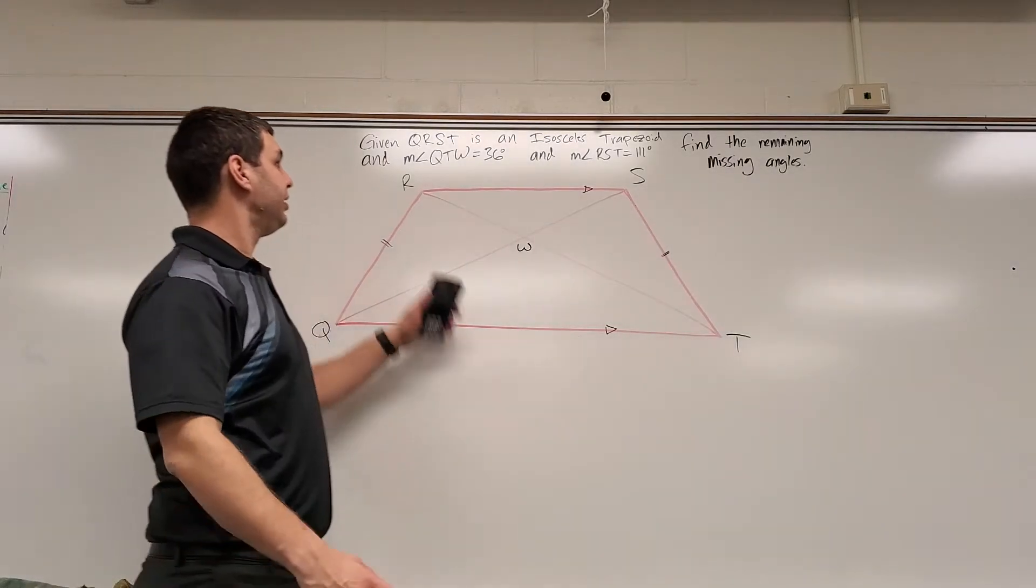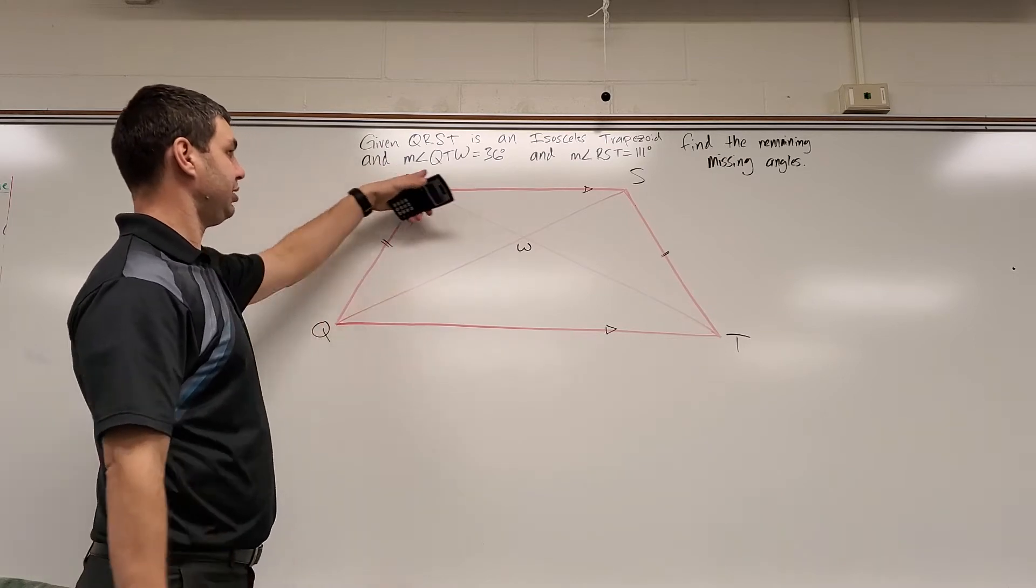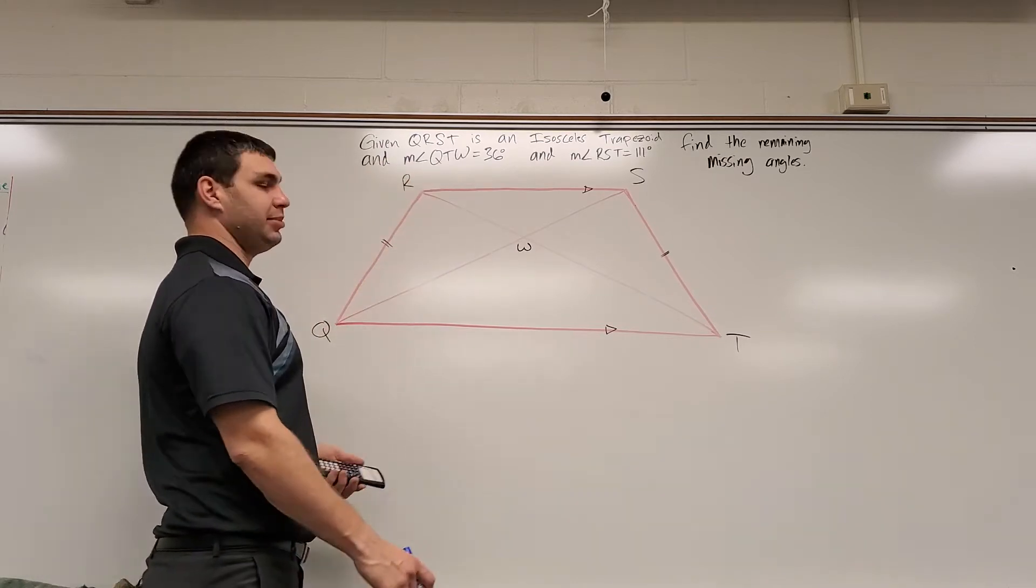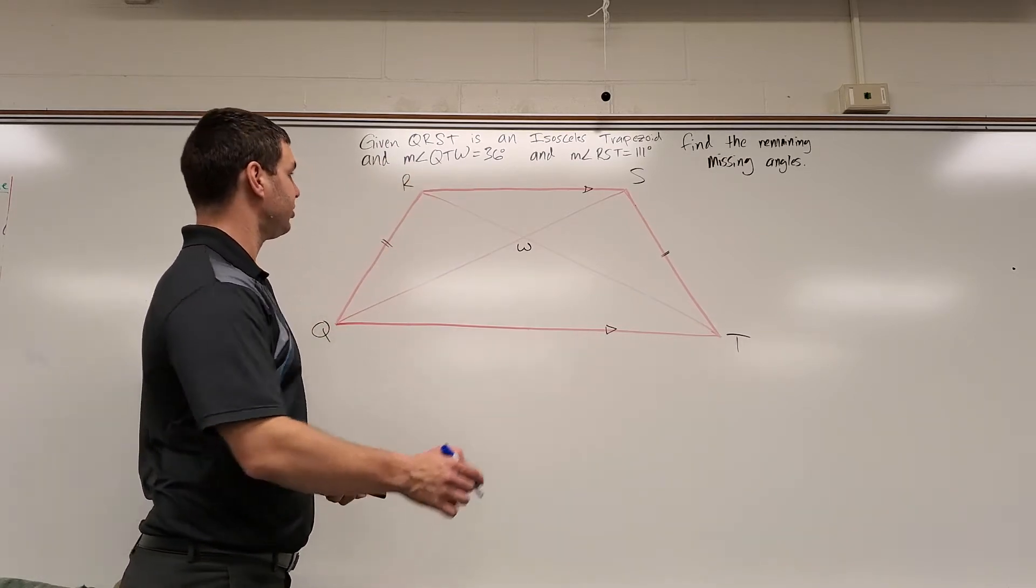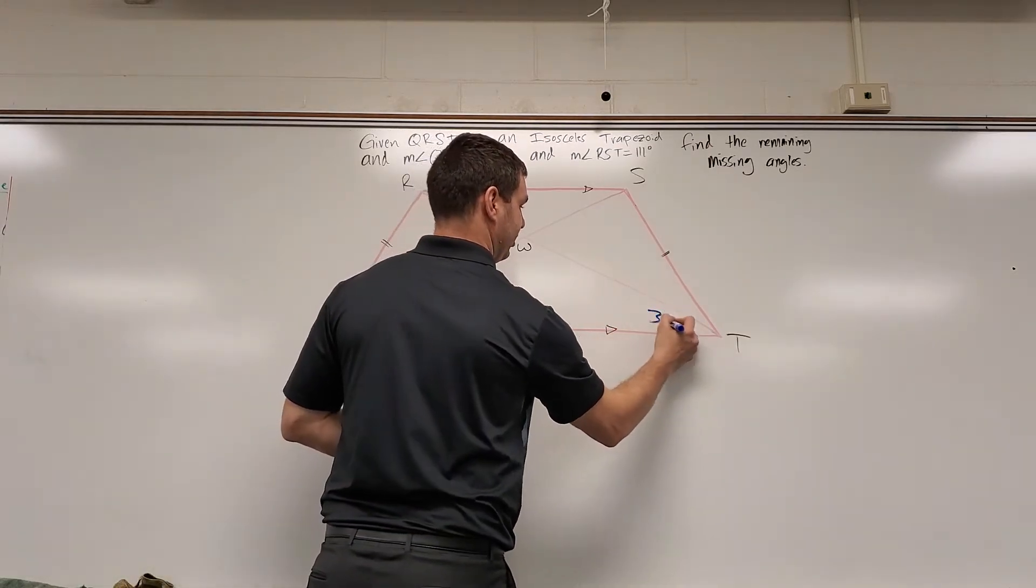All right, this problem says given QRST is an isosceles trapezoid and the measure of angle QTW is 36 degrees. So let's write that in. QTW, that's this one, is 36 degrees.